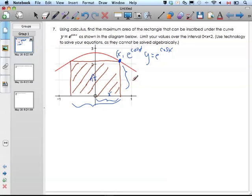Meaning this distance is e to the cosine of x. That's how high this rectangle is. This distance is x, so the whole distance is 2x. If I'm going to find my area function,